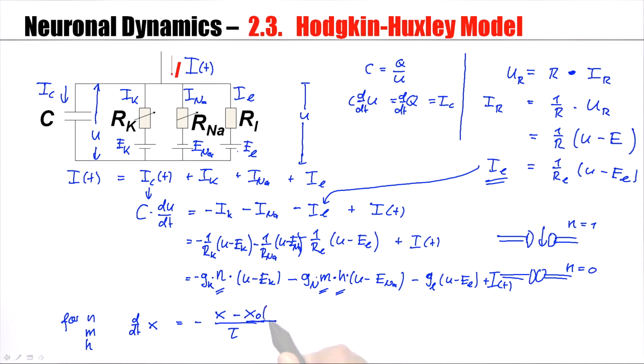A simple linear differential equation worked. However, Hodgkin and Huxley found that the value X0 that X likes to take, the stationary value X0 depends on the voltage. Moreover, the time constant tau depends on the voltage.